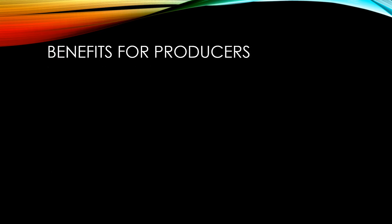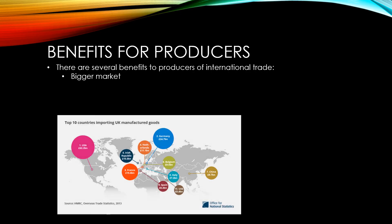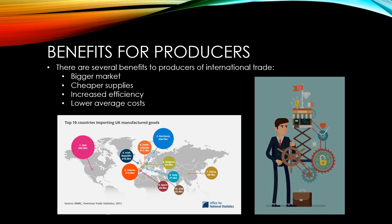International trade also brings a range of benefits for producers. The most obvious is that they have a bigger market to which to sell their goods and services. They may also be able to acquire cheaper supplies as inputs to their production process. Increased competition forces firms to become more efficient — one way they may do this is by growing in size and taking advantage of economies of scale, leading to lower average costs.